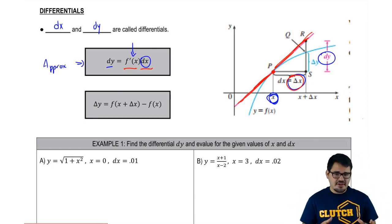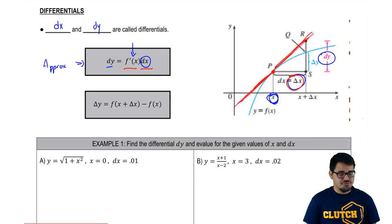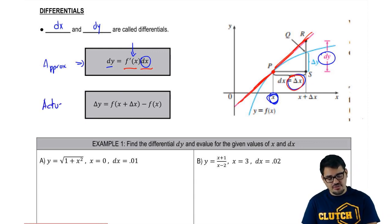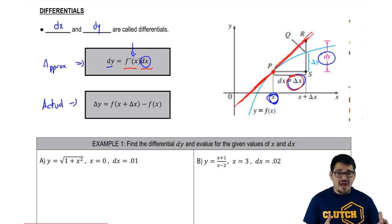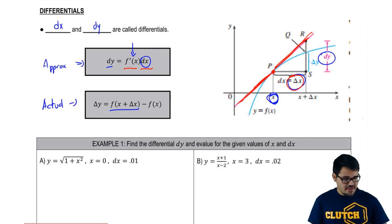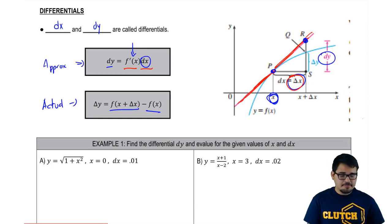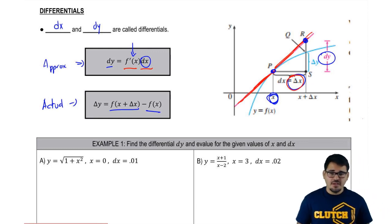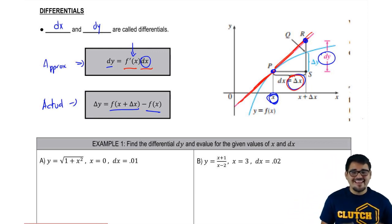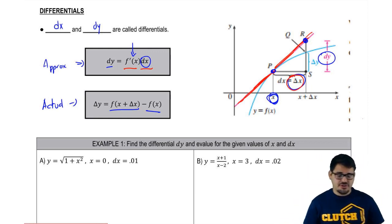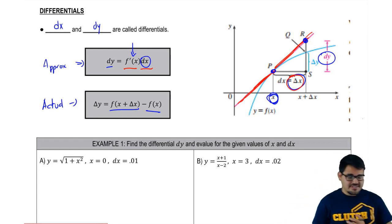And then we're going to compare that to the actual change in y by subtracting: f of x plus the change in x — the higher y value — minus f of x, the lower y value. So that is how we find the actual difference in y, and that's how we find the approximation of the difference in y. So now let's go ahead and do some examples.